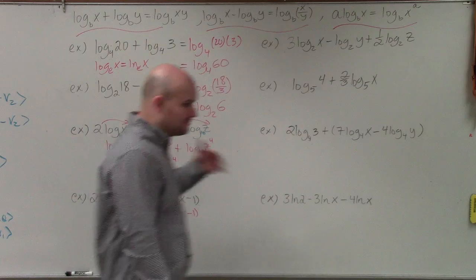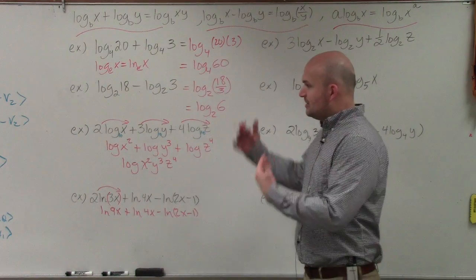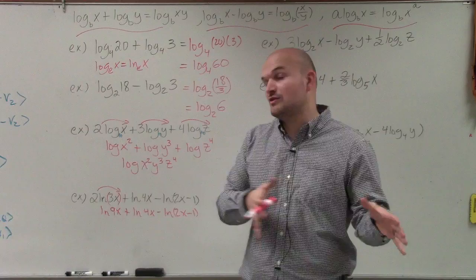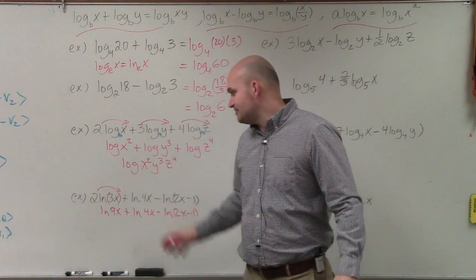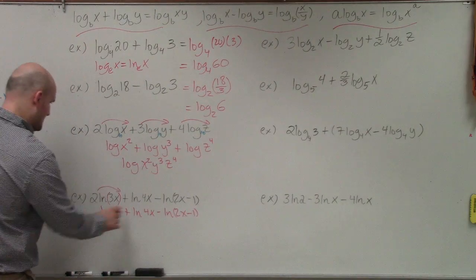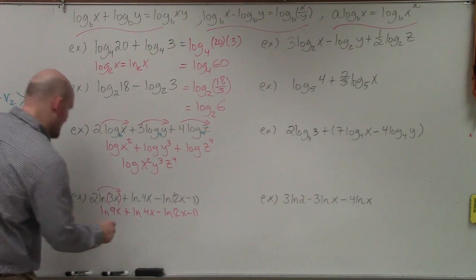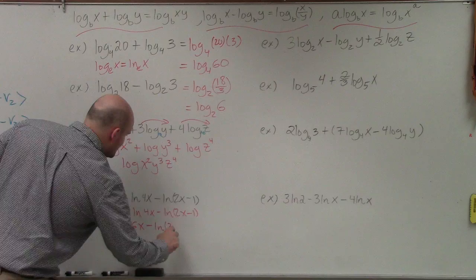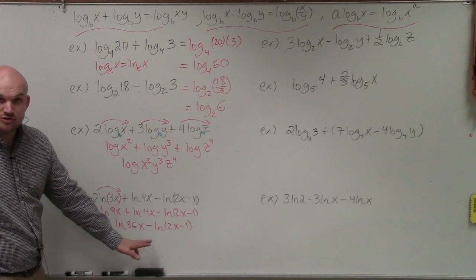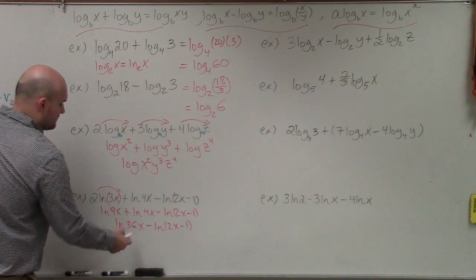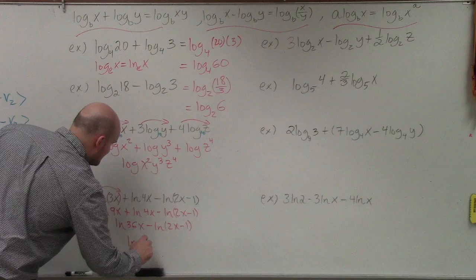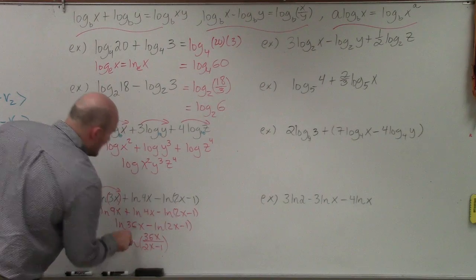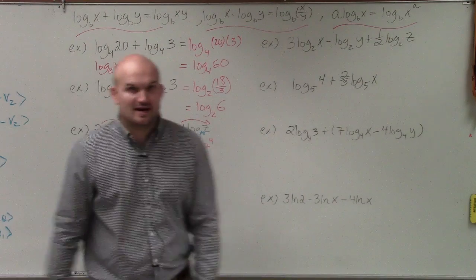When condensing, we follow our rules of operations and work from left to right unless we see parentheses. My first step is to multiply: 9x times 4x gives 36x. So I have ln of 36x minus ln of 2x minus 1. Now applying the quotient property, I divide 36x by 2x minus 1. My final answer is ln of 36x all divided by 2x minus 1 — and that's base e.